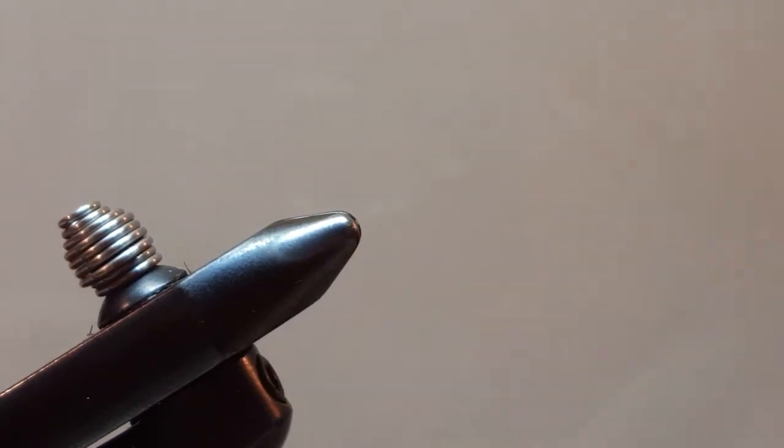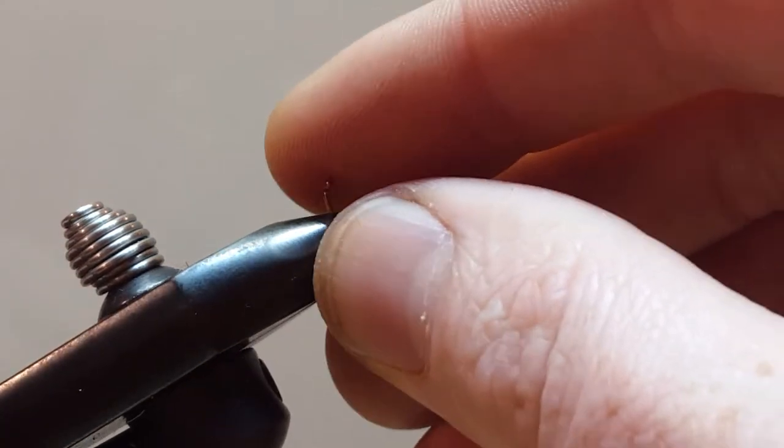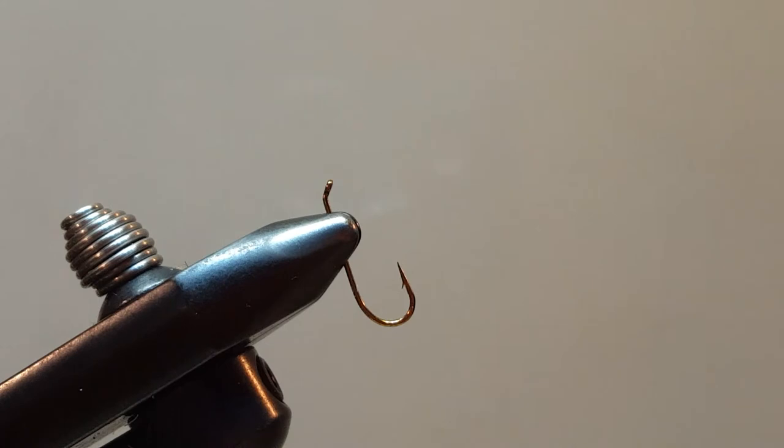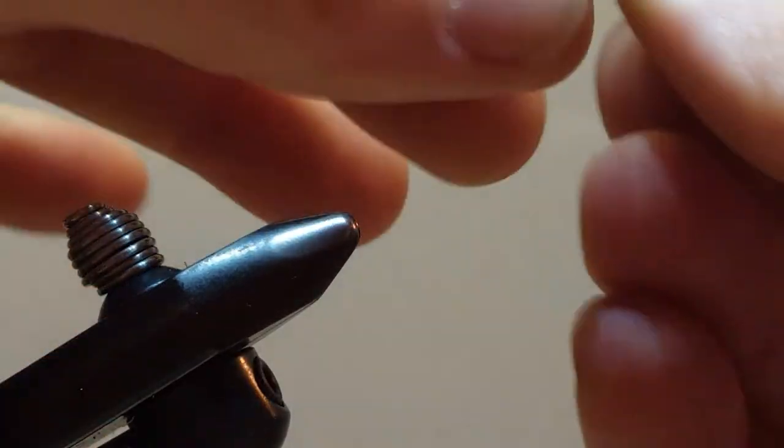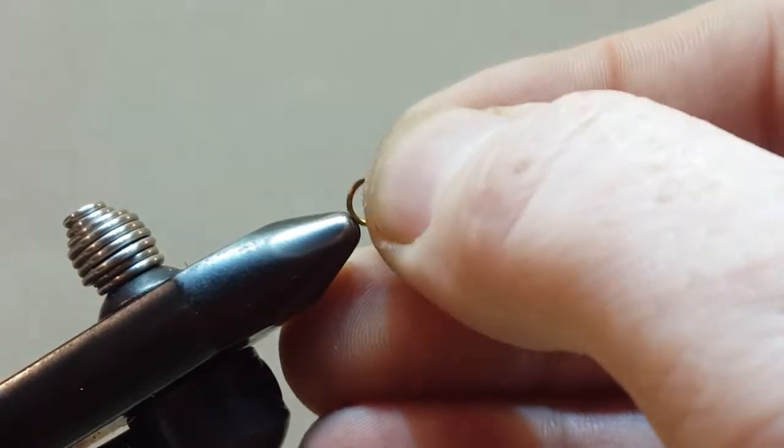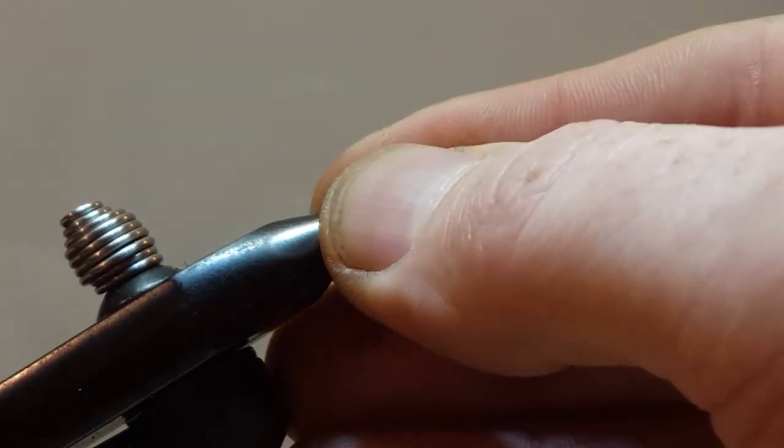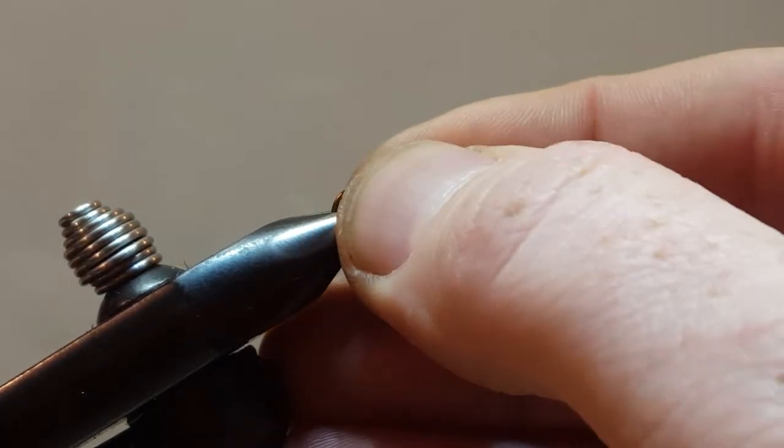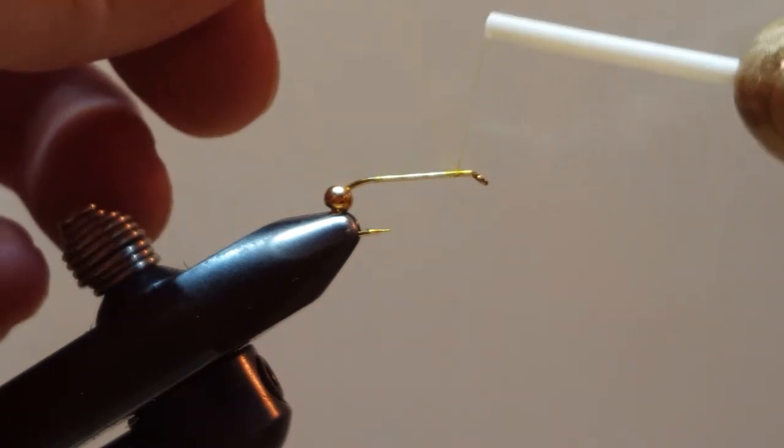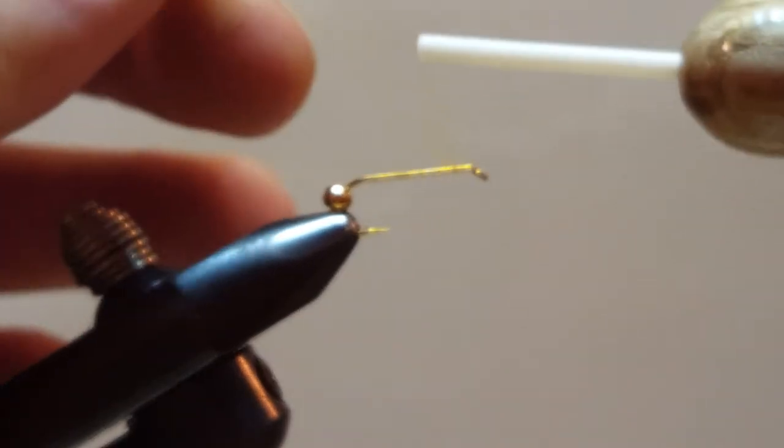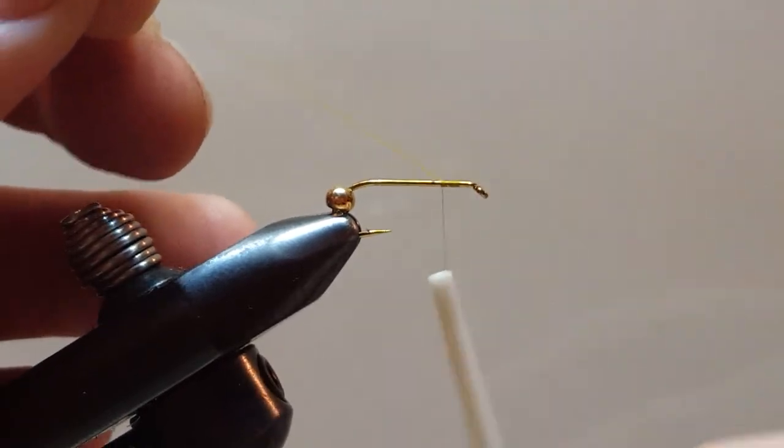Let's go ahead and remove our sample. And the first thing I'm going to do is slide my bead on there. I'm going to put it in small hole first. Secure our hook in our vise. I'm going to slide that down. And, like all good flies, this one will begin with, actually, the second step is a single wrap of thread.